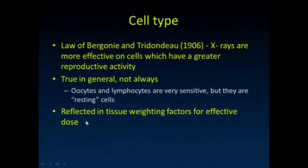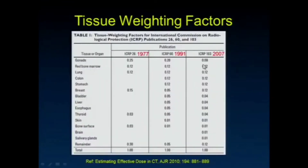If you look at those weighting factors on the tables for effective dose, they roughly follow this rule. Why are skin, brain, and muscle cells relatively radiation insensitive? The reason is they really don't have the same reproductive activity. Here's the skin at 0.01. You have to be careful with the thyroid — it doesn't have a huge weighting factor, but remember the thyroid is a very small piece of tissue. It's quite radiation sensitive given its size, contributing 4% to effective dose for an organ nowhere near 4% of total body weight.